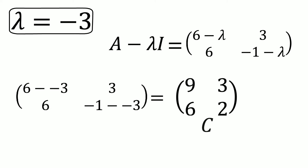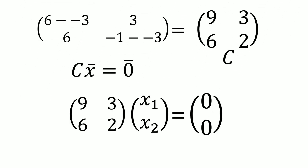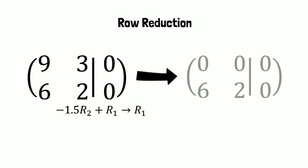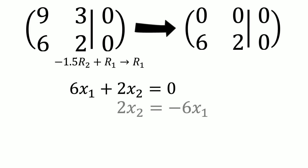We now have to solve C multiplied by the vector x equals the zero vector. So matrix C multiplied by the vector x consisting of x1 and x2 equals the zero vector. The next step is row reduction. You can see the entries of matrix C and the solutions of 0. When we multiply row 2 by minus 1.5 and add this to row 1, we find a new row 1 consisting of zeros only. When we multiply 6 by x1 and 2 by x2, we find that 6x1 plus 2x2 equals 0. This means that 2x2 equals minus 6x1, which simplifies to x2 equals minus 3x1.